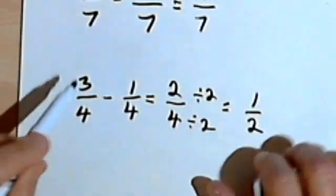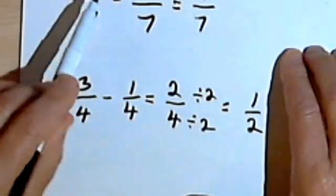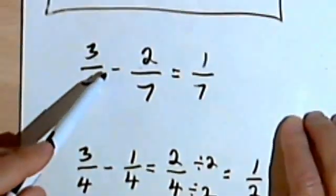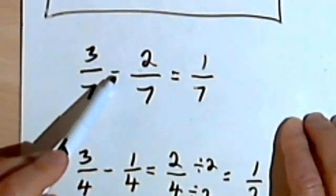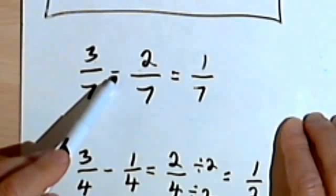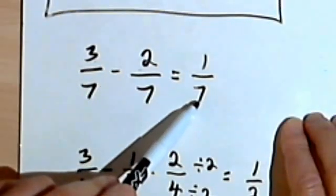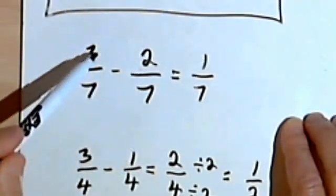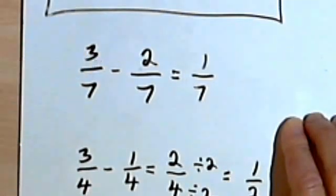Basically, when your denominators are the same, just do the operation that the sign tells you to do — addition or subtraction. Keep the denominator the same, and the numerator will become the result of that addition or subtraction.